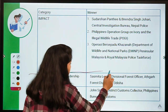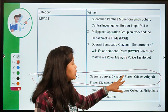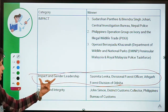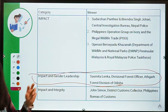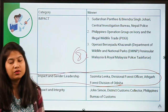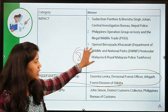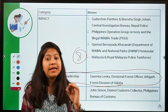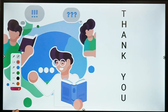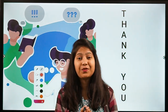There is also another winner from India: Sasmita Langash from the Divisional Forest Department of Odisha, who won in the category of Impact and Gender Leadership. A total of eight winners were recognized in the fifth edition of the Asia Environmental Enforcement Awards. Focus on the Indian awardees and their categories for the examination.